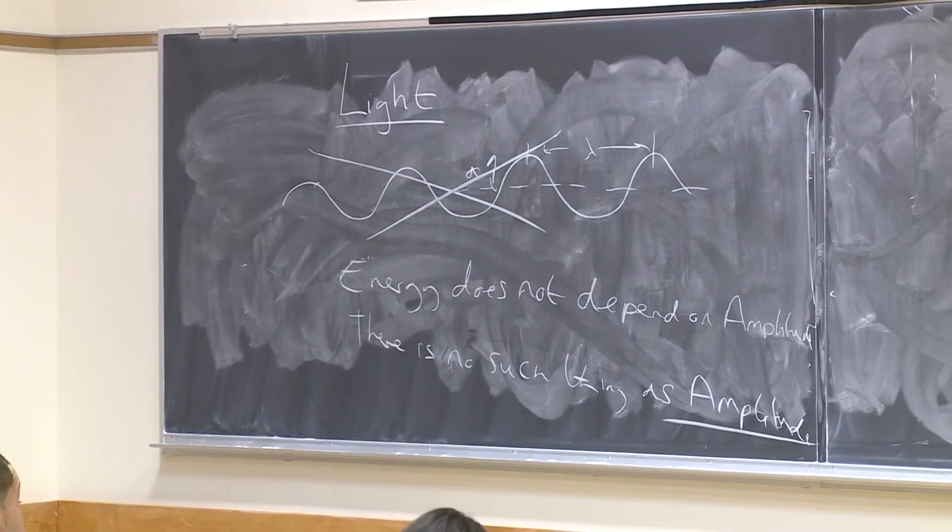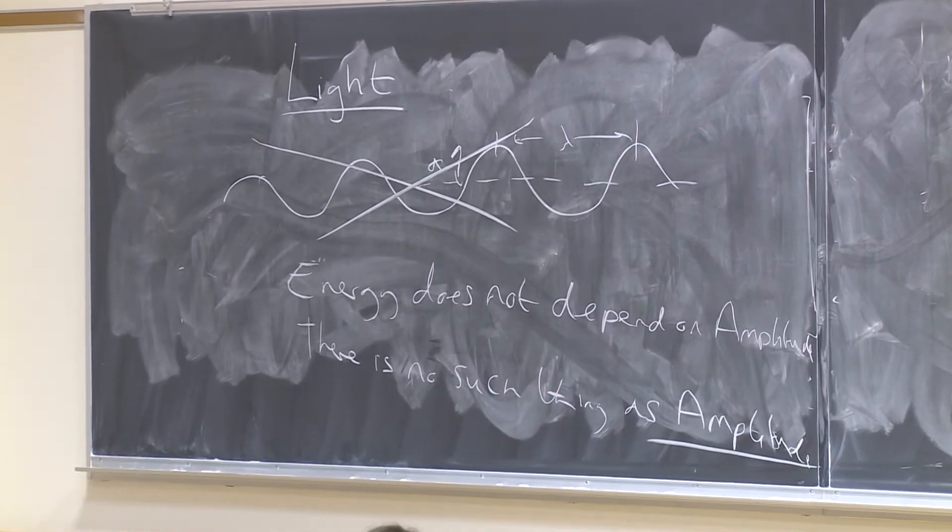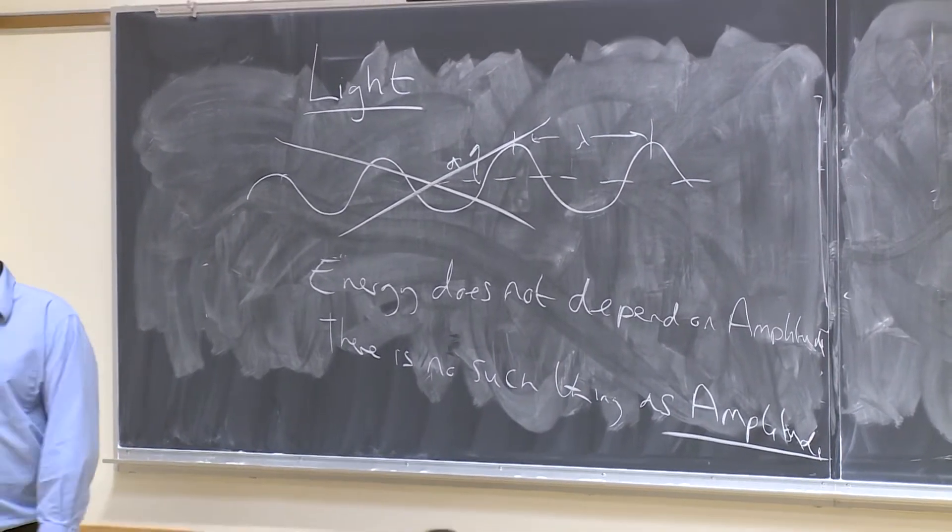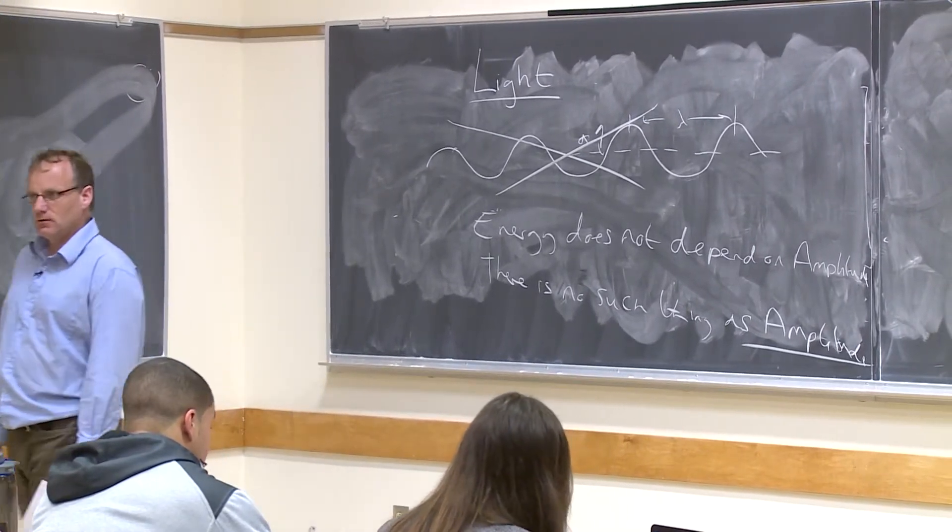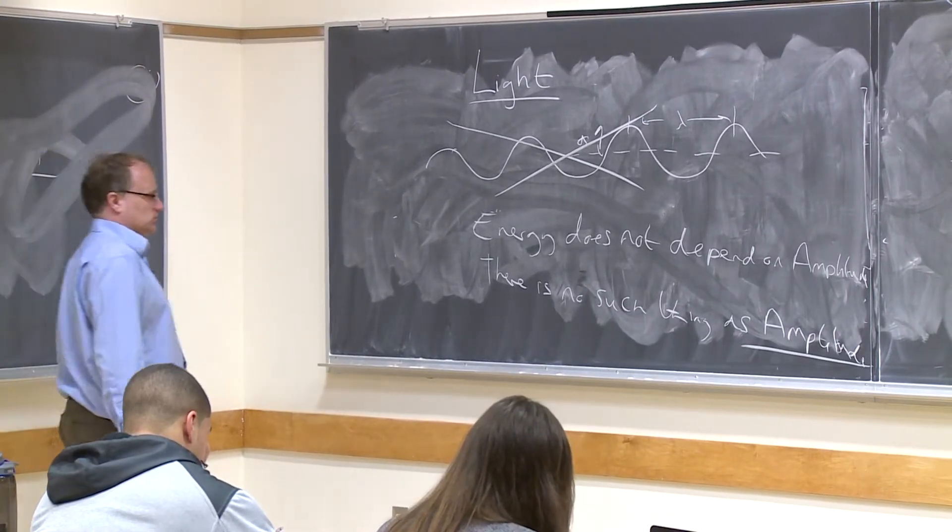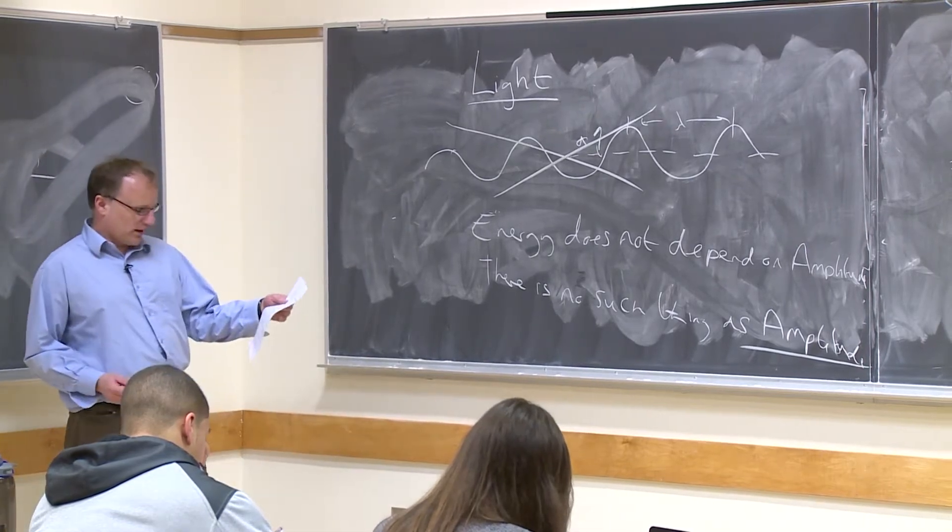If you look at things at a really small level, you break down light, you find out that it's made of lots of bits. So we don't actually have amplitude. What replaces amplitude?